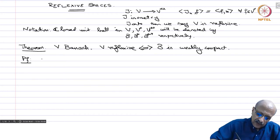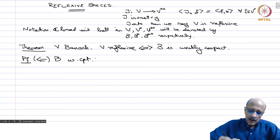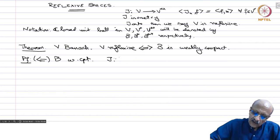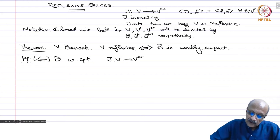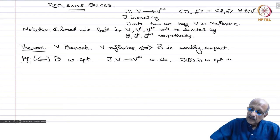Proof. First assume that B is weakly compact. J from V to V double star is an isometry, therefore it is continuous, and we have seen that it is also weakly continuous. Therefore JB is weakly compact in V double star.